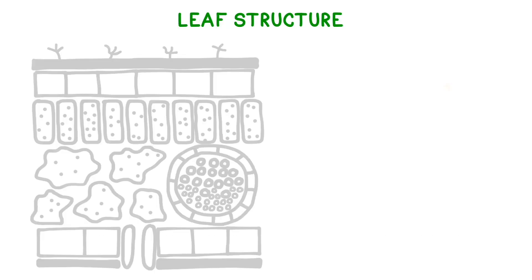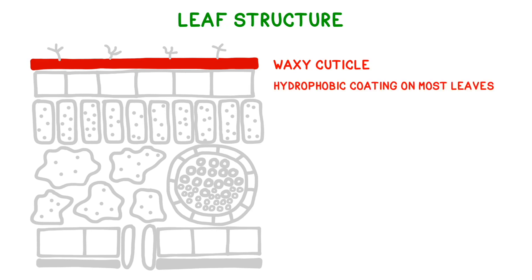The uppermost layer of the leaf is called the waxy cuticle. This is a very thin, hydrophobic layer that's on the surface of most leaves. This thin coating helps to reduce water loss via transpiration, and it's why water will bead on the surface of leaves rather than soaking in.